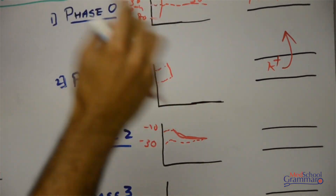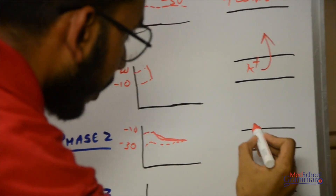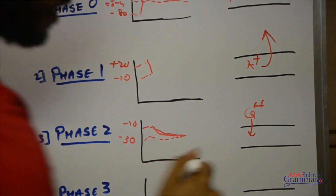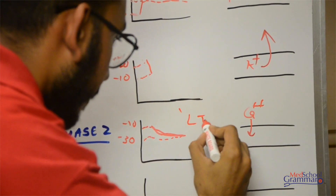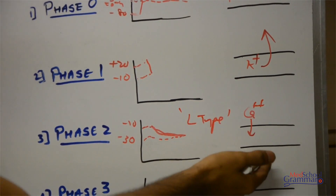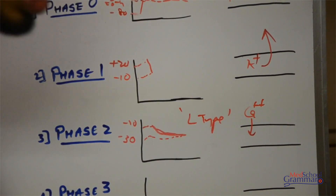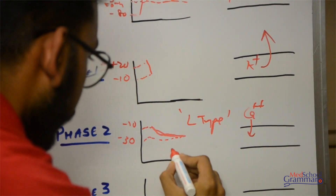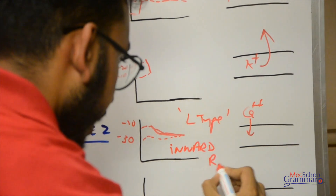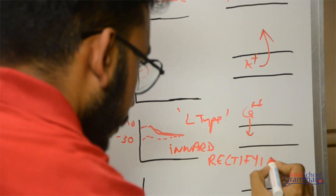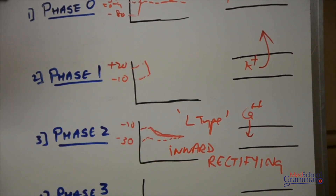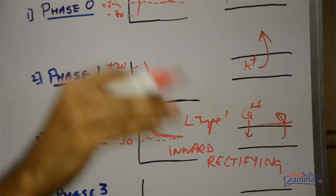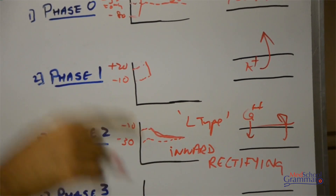The plateau phase occurs due to two reasons. First, L-type calcium channels open and calcium starts diffusing in. Second, inward rectifying potassium channels close, reducing potassium efflux. With calcium influx increased and potassium efflux reduced, the negativity inside the cell decreases only very slowly, creating the characteristic plateau of phase 2.